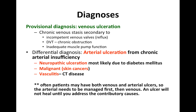My differential diagnosis includes arterial ulceration from chronic arterial insufficiency, neuropathic ulceration most likely secondary to diabetes mellitus or chronic vitamin B12 deficiency, malignancy such as skin cancers, vasculitis, and connective tissue diseases like scleroderma. It's important to note that sometimes the patient may have both venous and arterial disease contributing to the ulceration. In this situation, it's important to manage the arterial disease first, as the ulcer will not heal until you address all contributory causes.